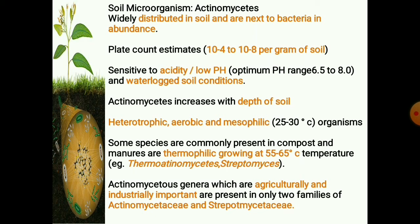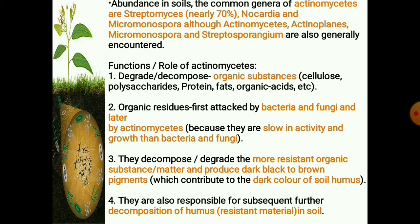Actinomycetes genera which are agriculturally and industrially important are present in only two families: Actinomycetaceae and Streptomycetaceae. In order of abundance in the soil, the common genera of actinomycetes are Streptomyces, Nocardia, and Micromonospora, although Actinoplanes, Micromonospora, and Streptosporangium are also generally encountered. In terms of their role, actinomycetes degrade or decompose all sorts of organic substances like cellulose, polysaccharides, fats, proteins, and organic acids. Organic residues added to the soil are first attacked by bacteria and fungi and later by actinomycetes.